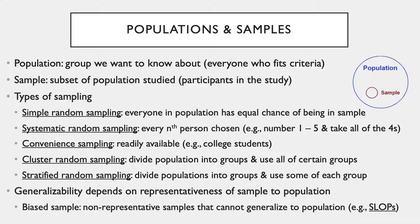Stratified random sampling also involves dividing into groups called strata. Unlike cluster random sampling, where groups are based on something already existing like geography, in stratified random sampling the groups are divided based on some characteristic. And unlike cluster sampling where all parts of a group are sampled, in stratified random sampling only some of each group are sampled. For example, if conducting a study with college students, you might divide participants into freshmen, sophomore, junior, and seniors, then randomly select 25 from each group.